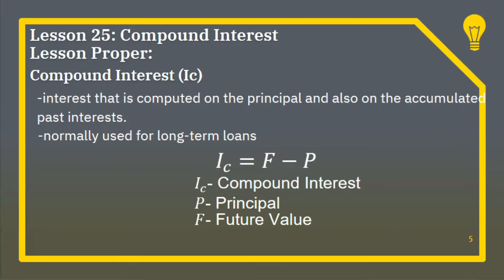We proceed to the lesson proper: compound interest, denoted by the variable Ic. It is interest that is computed on the principal and also on the accumulated past interest. Normally, compound interest is used for long-term loans.